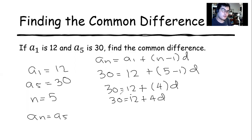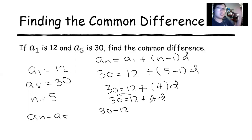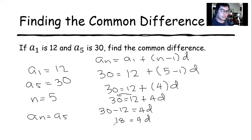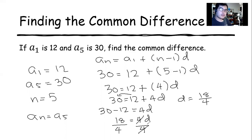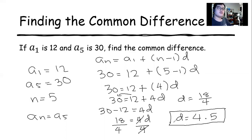We transpose 12 to the other side. Since it was positive on the right side, it becomes minus 12 on the left. So 30 minus 12 equals 18, giving us 18 equals 4d. Dividing both sides by 4 to isolate d, what remains is d equals 18 over 4. The quotient of 18 and 4 is 4.5. So our common difference for this sequence is 4.5.